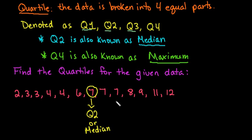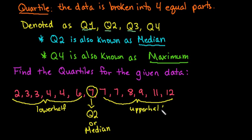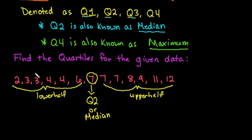After you've found Q2, what you're going to do is find the median of the lower half. So this would be our lower half, and this would be our upper half. We're going to use that lower half and the upper half, and that will give us our Q1 and our Q3.